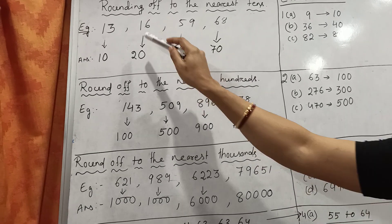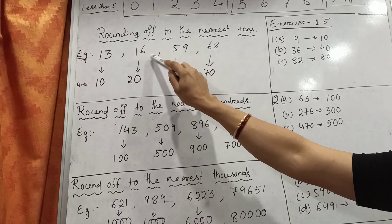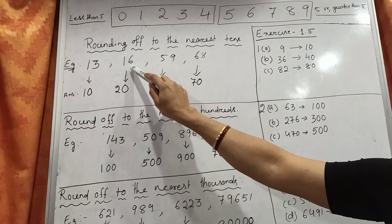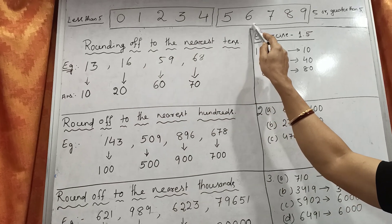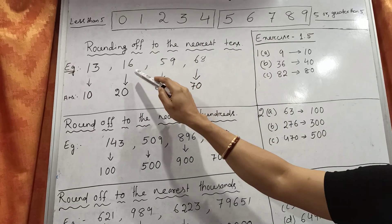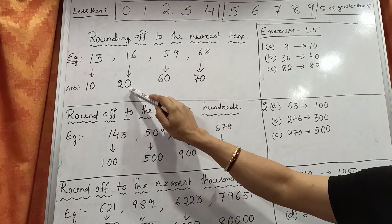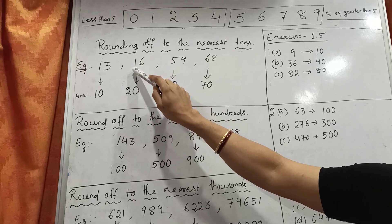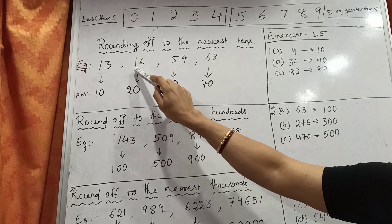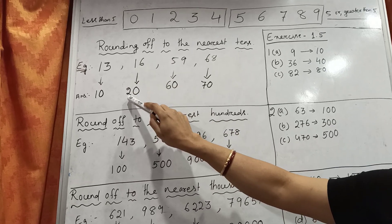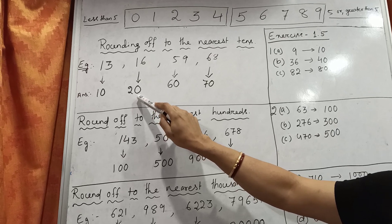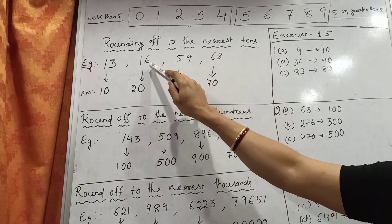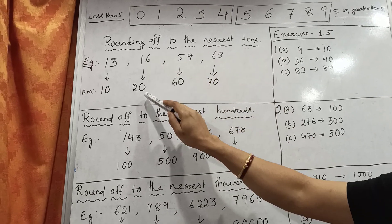See the next example. Here is 16. The units digit is 6, which is more than 5. So in place of the units digit we write 0, and the tens digit, which is 1, is increased by 1, so 1 plus 1 is 2. The nearest 10 of 16 is 20.